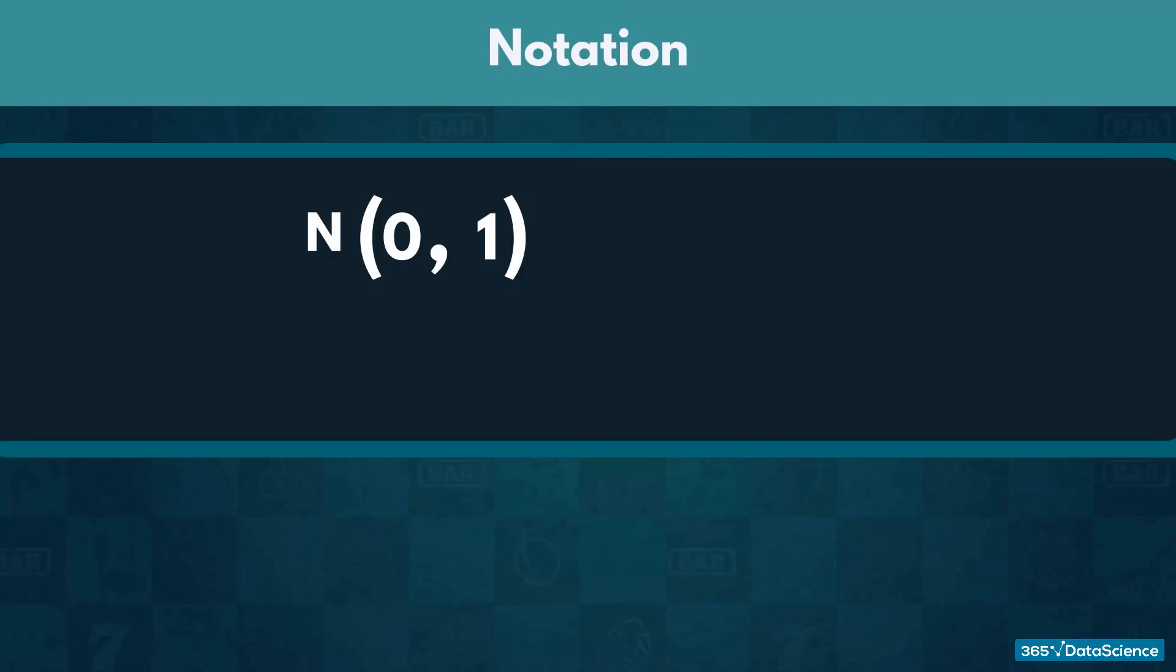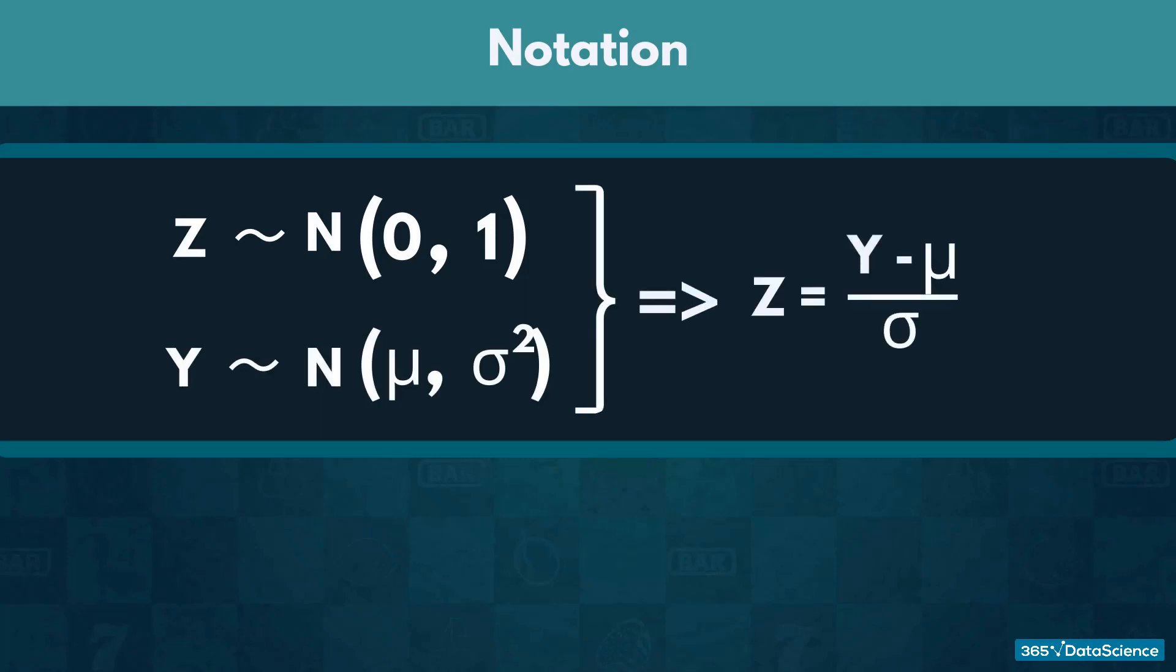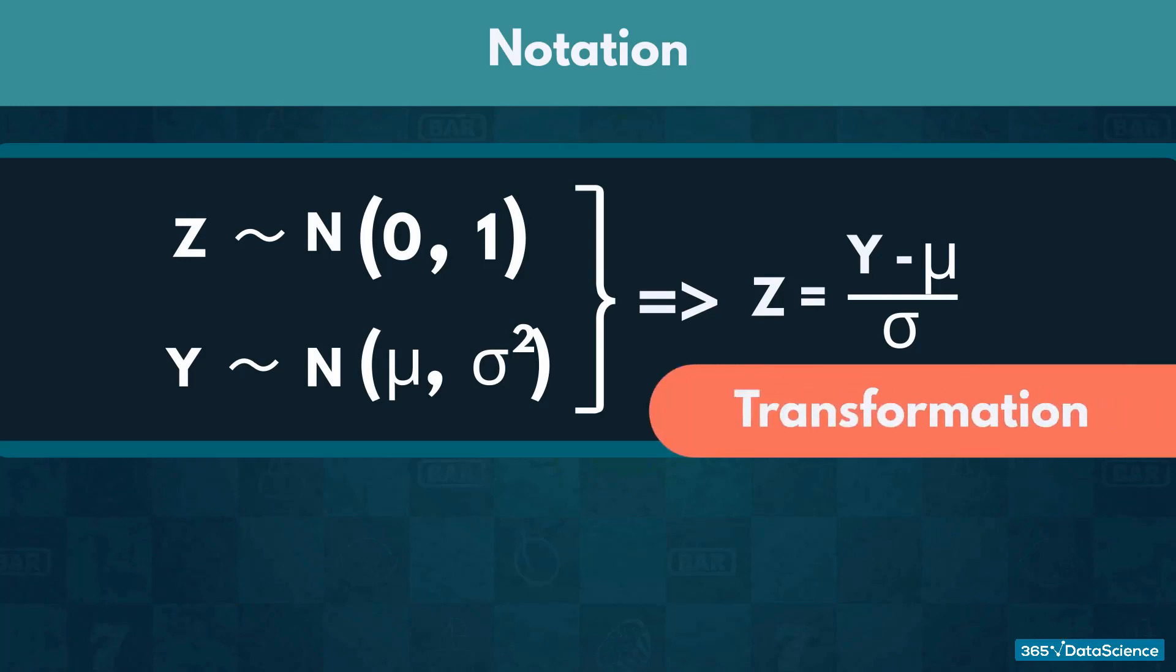If we denote the standard normal distribution with Z, then for any normally distributed variable Y, Z equals Y minus μ over σ. This equation expresses the transformation we use when standardizing.